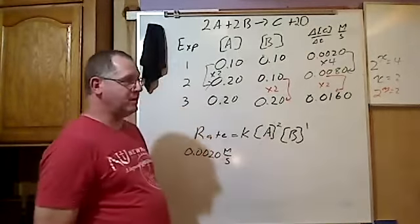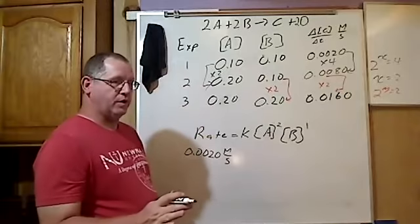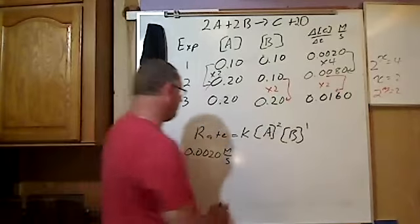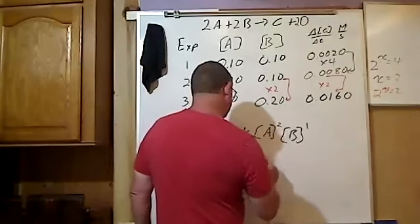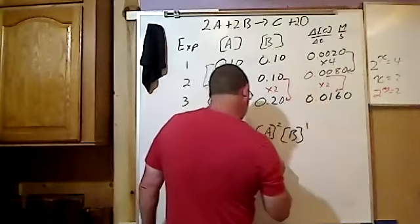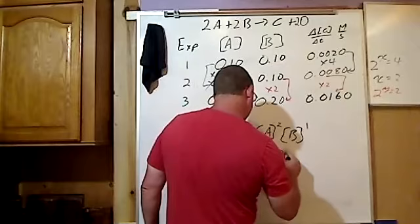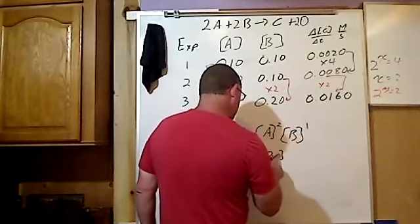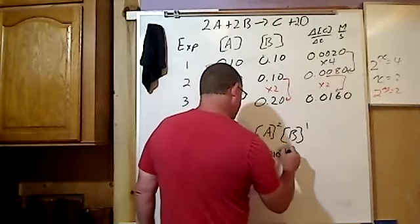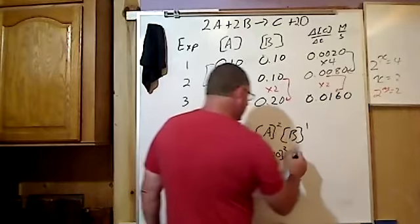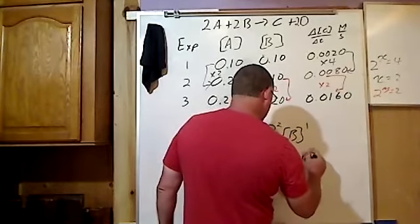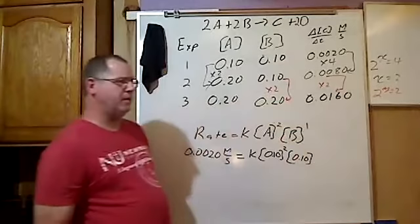And because we're in kinetics, our units are important here. And that's equal to k, which is our unknown. And this is 0.10, 0.10 squared, because A is squared, times 0.10. And I've substituted in the first one.